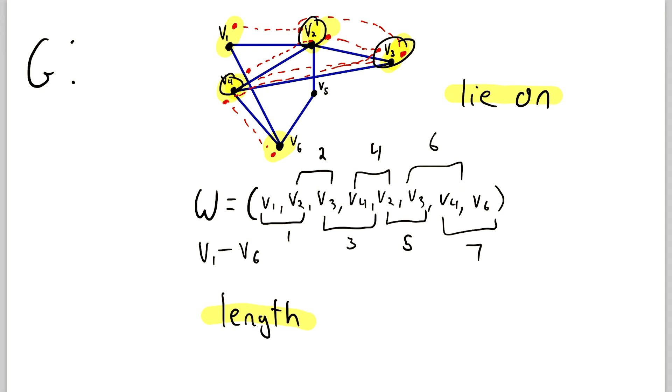If we wanted to describe W some more, we could say that W is an open walk, because the vertex we start at in W is not the vertex we end at. V1 is not equal to V6, so we say that W is an open walk. And as you can imagine, if we went from V6 back to V1, which is where we started, then we would say that W is a closed walk. So an open walk is a walk where the first and last vertices are distinct, and a closed walk is where the first and last vertices are equal.